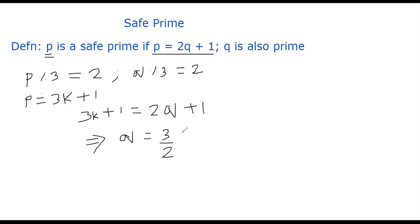Otherwise, q cannot be an integer, right? Q is an integer because we're talking about a prime. So k has to be a multiple of 2. Otherwise, this whole thing will be a fraction. So if k is a multiple of 2, what can you say about q?